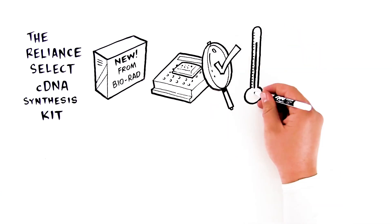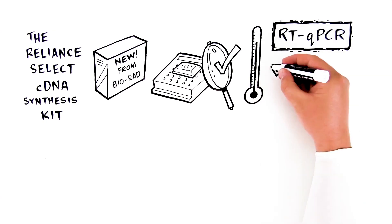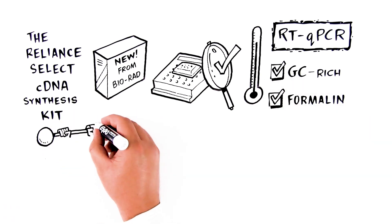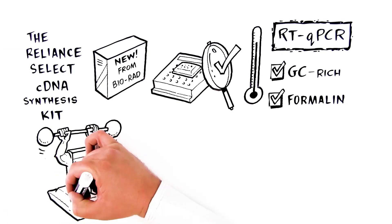The synthesis reaction is carried out at a higher temperature, allowing reverse transcription of GC-rich regions and complex secondary structures. The superior tolerance of the Reliance Select cDNA synthesis kit to common inhibitors, such as formalin, make it an ideal choice for FFPE samples.